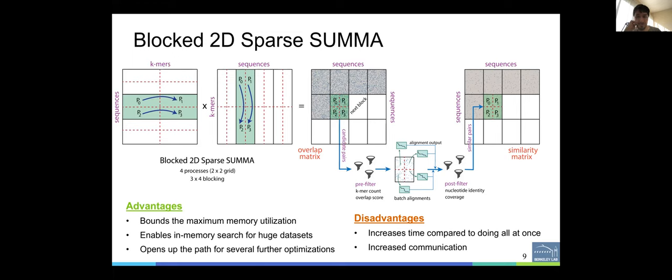We can limit the memory required by the entire execution of this search or the memory footprint of the similarity graph by using a block formation or the incremental formation of this symmetric matrix or the overlap matrix. So this parameter is tunable. So we have control over the amount of maximum memory we use. So in this way, we bound the maximum memory utilization, and then we enable in-memory search for huge datasets. And it also opens up the path for several further optimizations. The disadvantage is it increases the time compared to doing this thing all at once, but it is better than not being able to do this. And it also increases the communication while doing this multiplication on the left you see here, but it is negligible because we often overlap those with other computations.